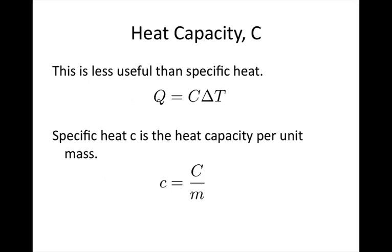Heat capacity is less useful than specific heat. Heat transferred equals heat capacity C times delta T, but heat capacity depends on both mass and material type. Specific heat, little c, is heat capacity per unit mass: c equals C over m.